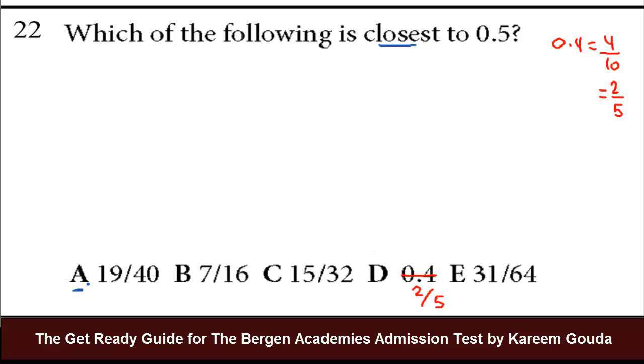For A, I'm going to write half, 0.5, which is what we're looking for in terms of what is closest to it, as something over 40. So what's half something over 40? It's 20 over 40. Now look here. The difference between 19 over 40 and 20 over 40 is 20 over 40 minus 19 over 40, meaning it is 1 over 40. So for answer choice A, the difference between 19 over 40 and half is 1 over 40.